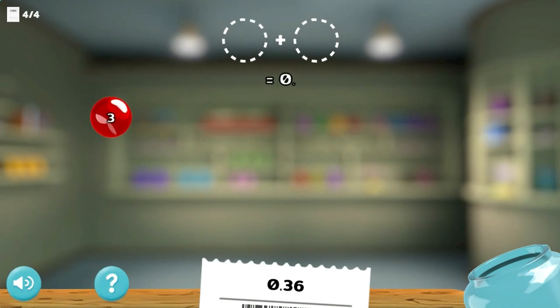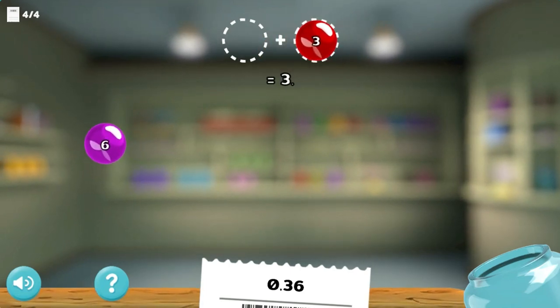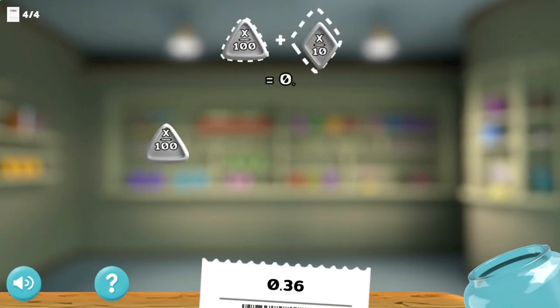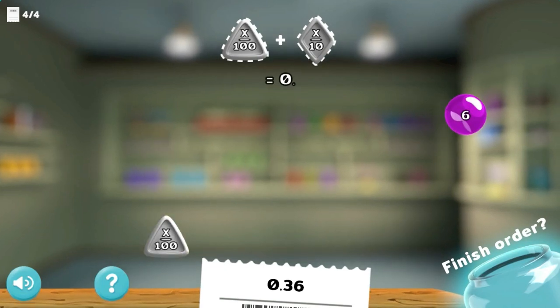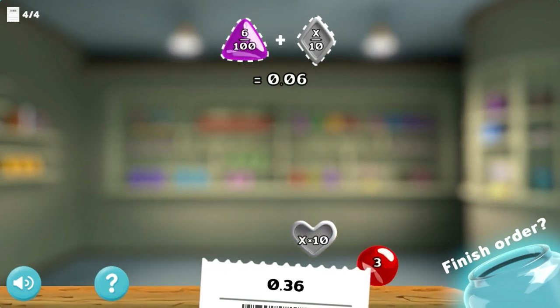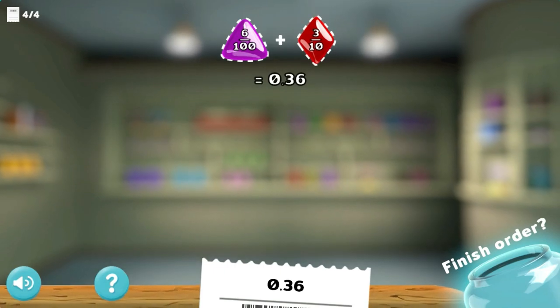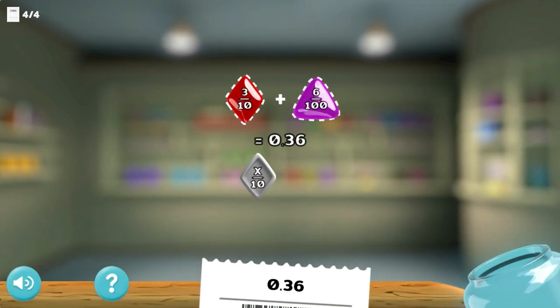Use the mouse to click and drag and drop different candy pieces to create decimal numbers by combining the right pieces together to create the correct number for the order. Complete orders to earn more money to upgrade your candy store.